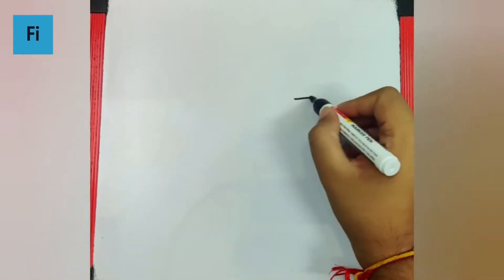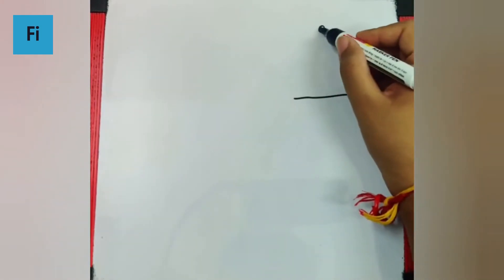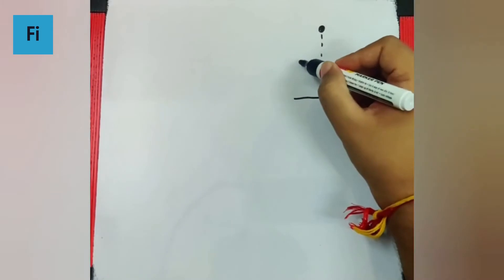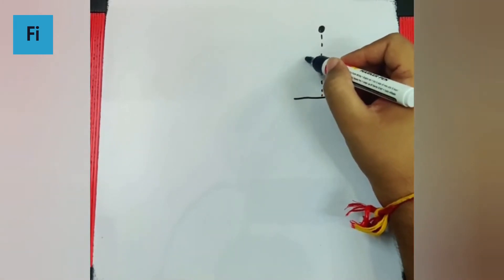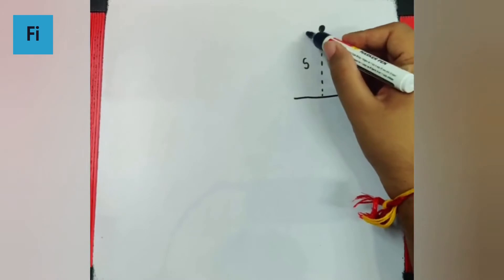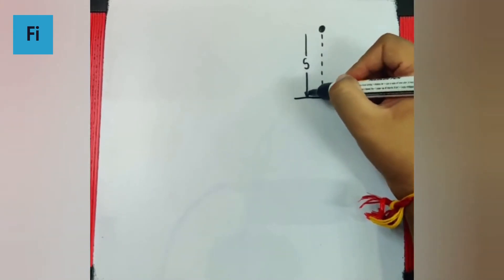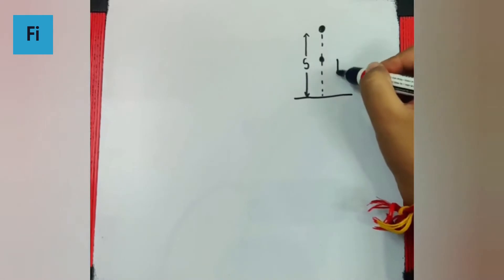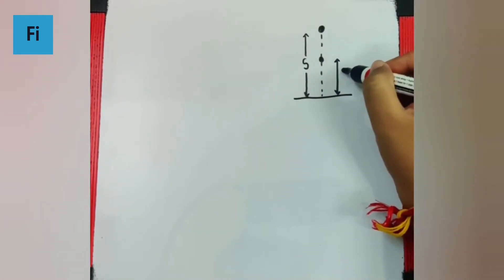So I can say this is the surface of earth and this is the point where the body is released. So I can say this is height s. So at some instant, let's say this, let's call that height as h.